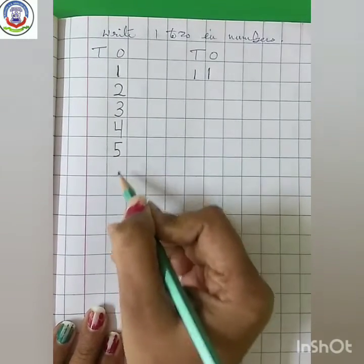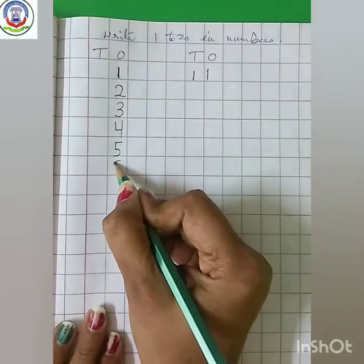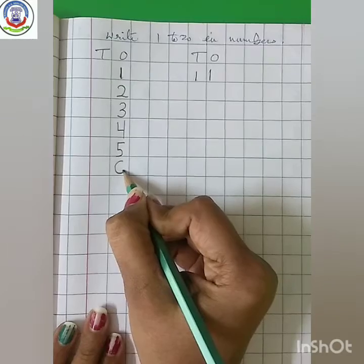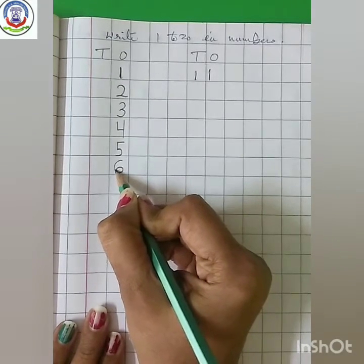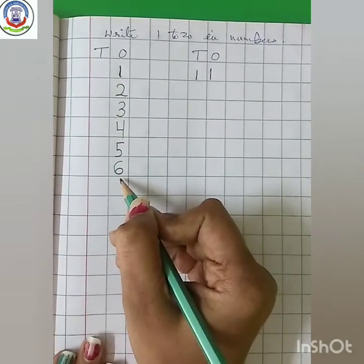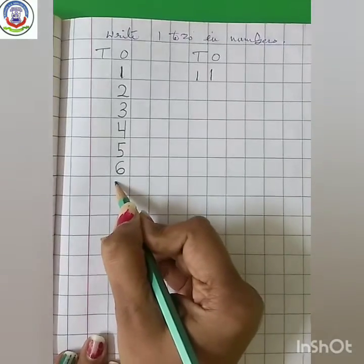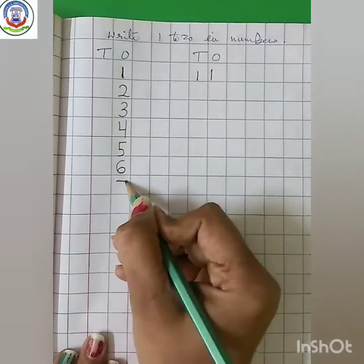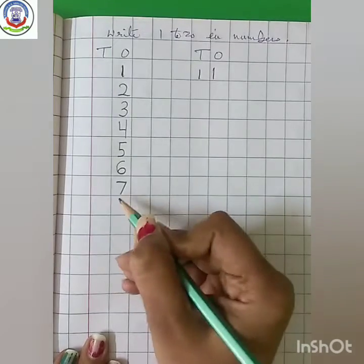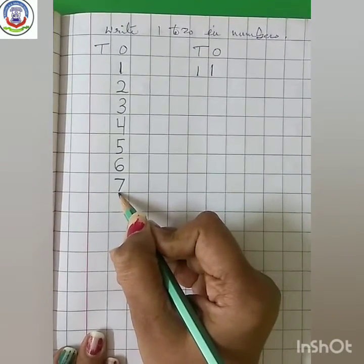Next number, make a curve and a small circle. Like this. 6. Next, sleeping line, slanting line. 7.